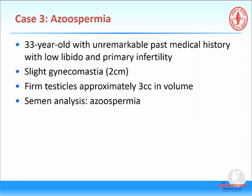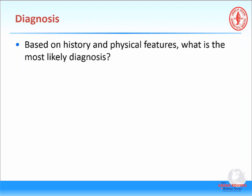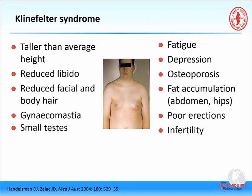Moving to the last case: a 33-year-old male with low libido and primary infertility, with slight gynecomastia. On exam, he has firm testes approximately 3 cc in volume, and semen analysis shows azoospermia. Based on the gynecomastia, low libido, and small testes, the most likely diagnosis is Klinefelter syndrome. These men typically have taller than average height, reduced facial and body hair, gynecomastia, and small testes, and often complain of fatigue, depression, low libido, poor erections — with infertility being the presenting complaint.